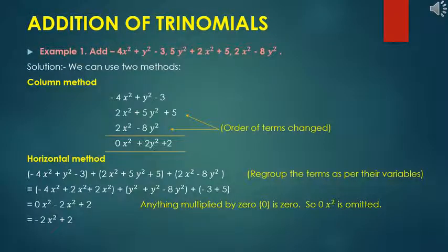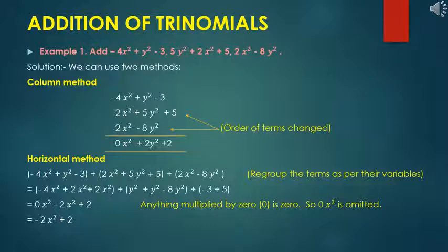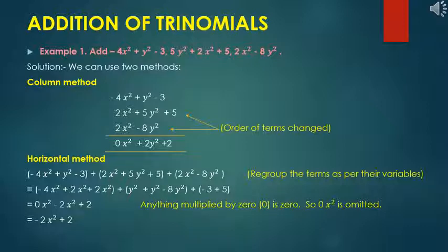Now, addition of trinomials. Add: minus 4x² plus y² minus 3; plus 2x² plus 5y² plus 5; plus 2x² minus 8y². Using the column method, arrange terms in columns and add: (minus 3 plus 5) gives plus 2; (y² plus 5y² minus 8y²) gives 2y²; (minus 4x² plus 2x² plus 2x²) gives 0x². So the answer is 0x² plus 2y² plus 2.